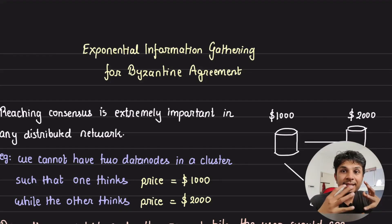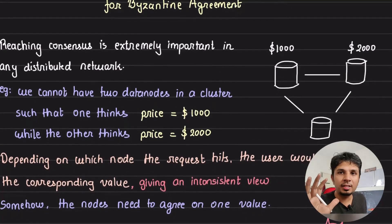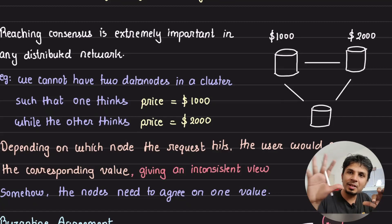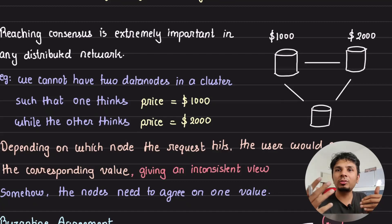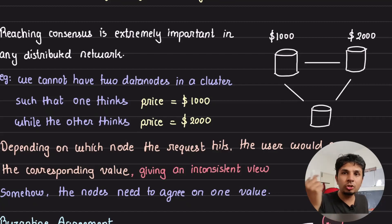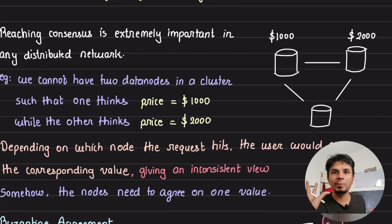Reaching consensus is extremely important in a distributed network. Say we have a database cluster in which one node thinks the value of price is $1000 while the other node thinks the value of price is $2000. Depending on where the request goes, we either work with 1000 or 2000, which gives a very inconsistent view to our clients. This is where the nodes need to talk to each other and come to a consensus on what the value of price is — either 1000 or 2000. This is the problem of distributed consensus.